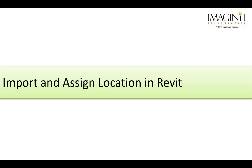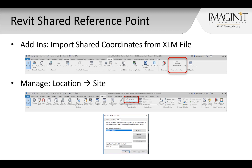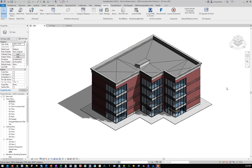With the coordinate XML file exported from Civil 3D, the next step is to import it into Revit and assign the location to the model. In Revit, the command for importing a coordinate XML file is located on the add-ins tab of the ribbon, and the location option is on the manage tab. Switching to a floor plan view makes it easier to identify the reference point and north angle.